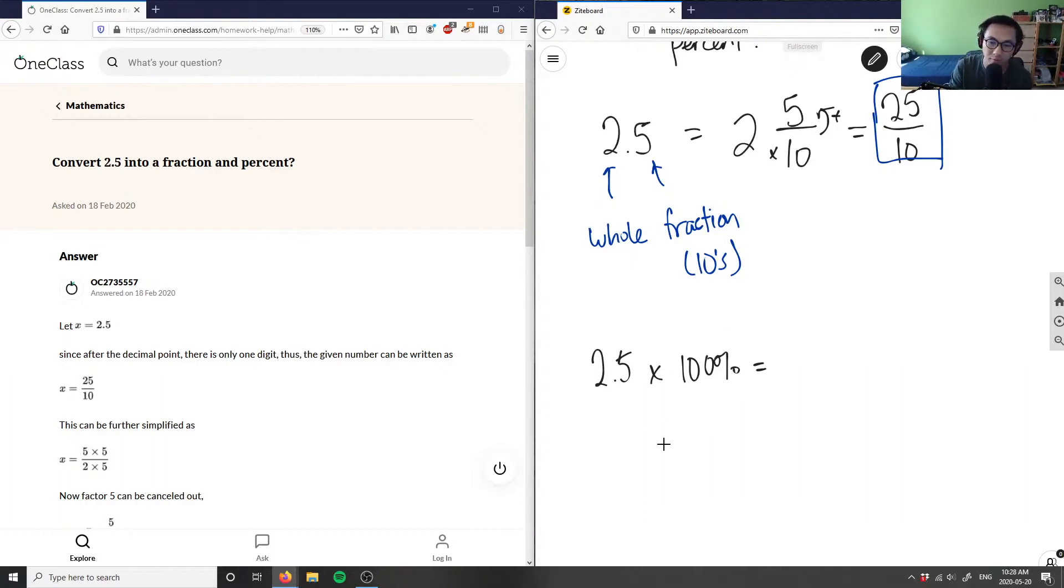You can split this up as 2 times 100 plus 0.5 times 100. So 2 times 100 is 200, plus 0.5 times 100 is simply just half of 100, so that's 50. This equals 200 plus 50, which is 250.